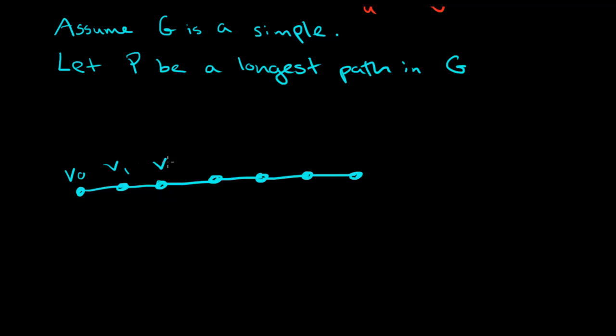So let's call this path something, V0, V1, V2, and it keeps going until some point, Vk minus 1, and finally ending in Vk. Now, this is a longest path in the graph. And the reason why we know that there is such a thing is because the graph is finite. So you cannot keep going on and on forever. There must be a longest path.